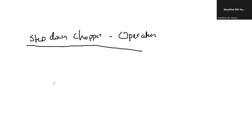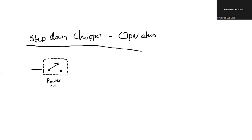First of all, we have to draw the circuit diagram of step-down chopper. You require one power electronic switch — we call it a power switch. Next, we need a freewheeling diode, we can write FD — freewheeling diode.